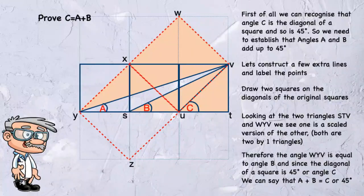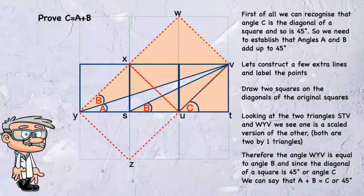Therefore, the angle WYV is equal to angle B. And since the diagonal of a square is 45 degrees, or angle C, we can see that A plus B equals C, or 45 degrees.